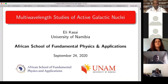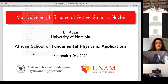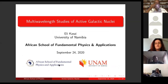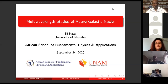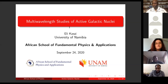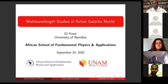So I'm going to talk about multi-wavelength studies of active galactic nuclei. I'm really just continuing from where Mariana left off. She did a very good job of introducing the topic on AGN, so I'm basically continuing from there. After I give a bit of my bio, I'll do a recap of what Mariana already talked about, and then I'll focus specifically on blazars, which are a type of AGN.